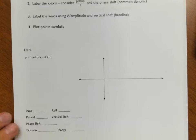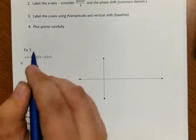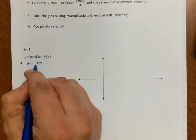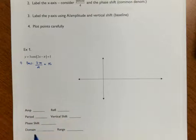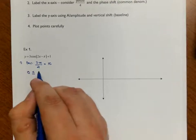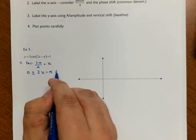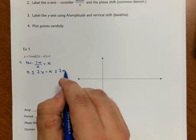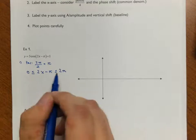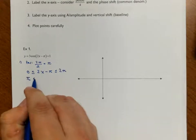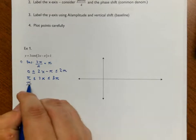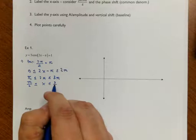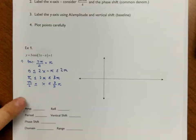Let's take a look at our first example: 3 times the cosine of 2x minus pi, plus 1. To begin, I'll figure out that my period is 2π divided by 2, which is π. Now I'll do my bookend method to find my phase shift and where I will be graphing. So: 0 ≤ 2x − π ≤ 2π. I add π to all three parts, then divide by 2, and I can see that my phase shift is π over 2.